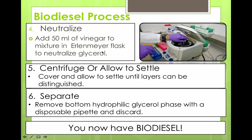We still have the sodium hydroxide catalyst in solution, which is a base, so we neutralize it by adding vinegar — an acid — to the flask. That neutralizes the solution, leaving essentially water mixed with the glycerol. Then we either centrifuge it — a faster way of settling — or let it sit until we have distinct layers of oil phase and water phase. We then separate the two phases, discarding the bottom water and glycerol phase, and we're left with our biodiesel.